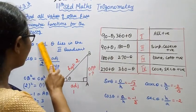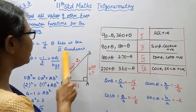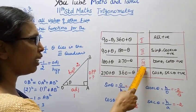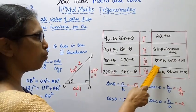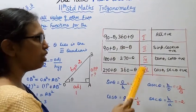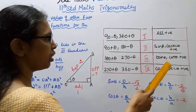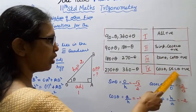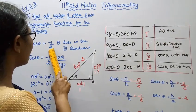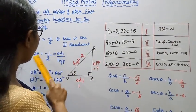Cos theta equals minus 1 by 2, theta lies in the third quadrant. In the third quadrant, tan is positive, while sin and cos are negative. So cos theta equals minus 1 by 2 is consistent with the third quadrant.